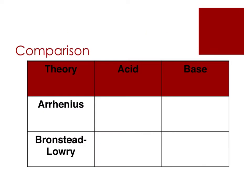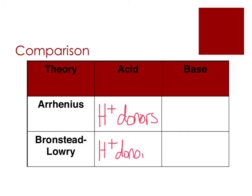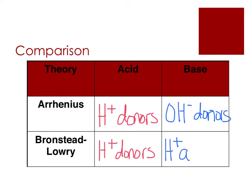Let's summarize the differences between the two definitions. Arrhenius acids are H+ donors, and Brønsted-Lowry acids are also H+ donors. Where the definitions differ is with bases. Arrhenius bases are OH- donors, or hydroxide donors, whereas Brønsted-Lowry bases are H+ — or proton — acceptors.